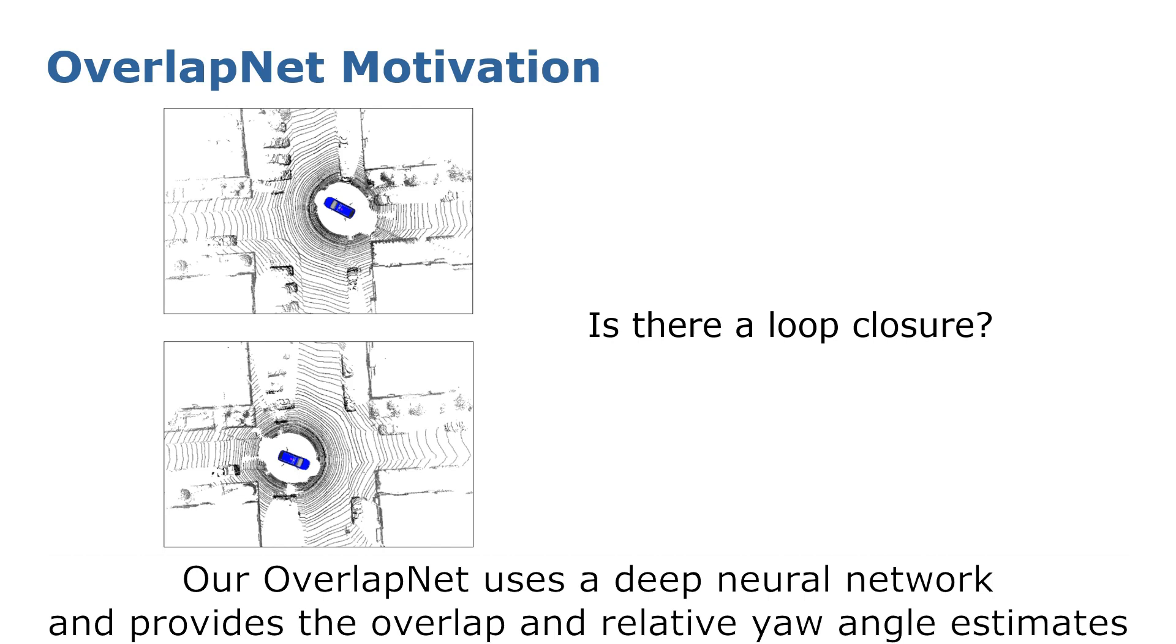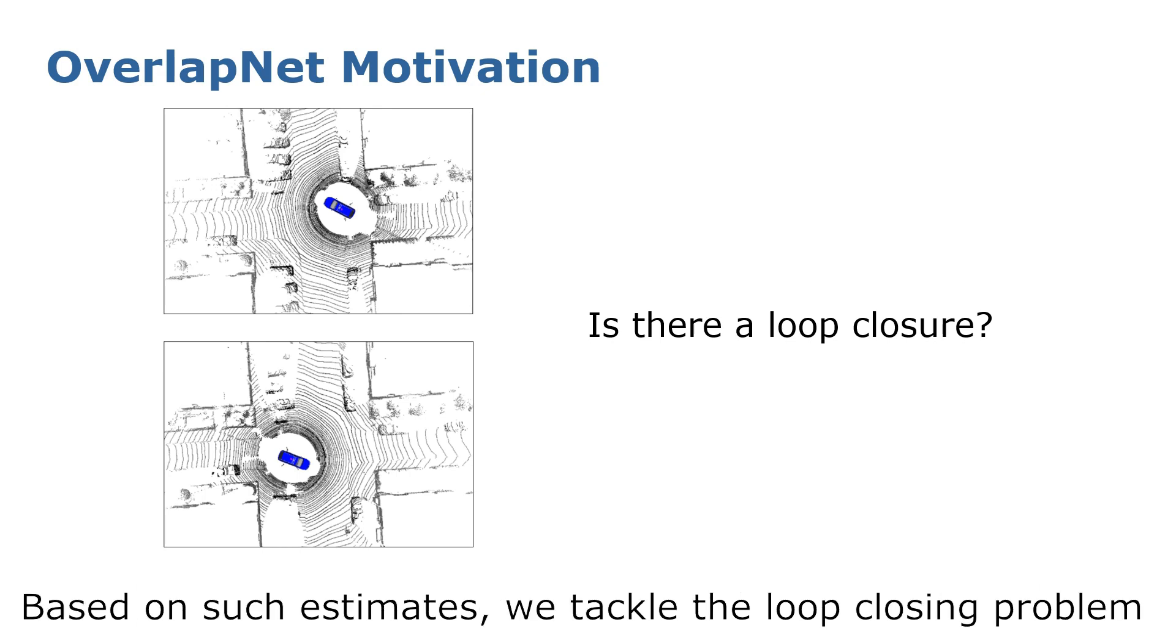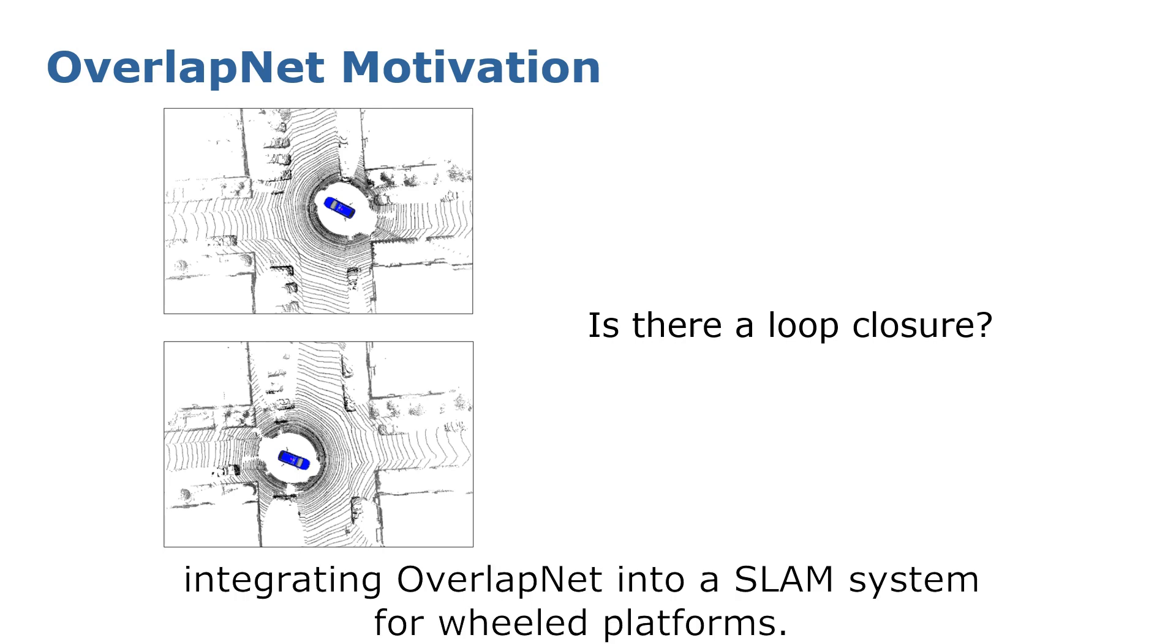Our OverlapNet uses a deep neural network and provides overlap and relative yaw angle estimates between pairs of scans in an end-to-end fashion. Based on such estimates, we tackle the loop closing problem by integrating OverlapNet into a SLAM system for wheeled platforms.